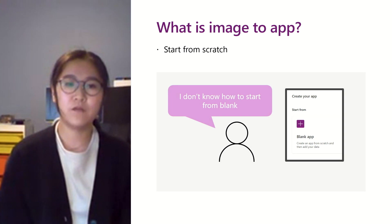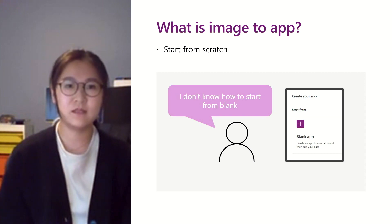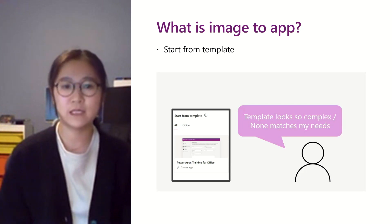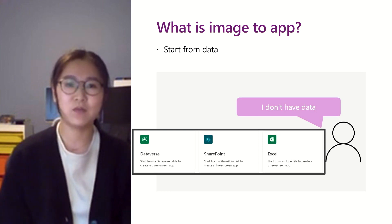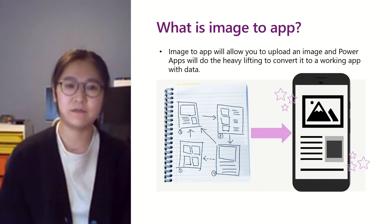Today we offer three different options. You can start an app from scratch, but we all know that sounds a little challenging, especially for new makers. We can also start from templates — they look like end-to-end full solutions, however there are just not enough templates and not all of them could meet your needs. We could start from data, but sometimes we simply don't have any data. With Image to App, you just upload an image — like a sketch on paper — and PowerApps will do the heavy lifting to convert it into a working app with data.